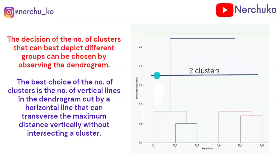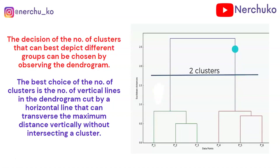Using this image, draw a horizontal line where we have the maximum vertical distance. The number of vertical lines that the horizontal line crosses gives the optimal number of clusters.